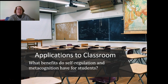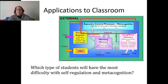That was a whirlwind tour of quite a few different models of self-regulated learning. They all come back to: how do we regulate our own learning, and how do we take control of the learning that happens? The readings this week should also help support that. So what benefits do we have for students in applications to the classroom? Why do we even think about this as teachers? We want students to be self-regulated so they can take control of their learning — a skill that will take them through college, graduate school, and their lives. We are not the dispensers of knowledge; they can learn on their own.